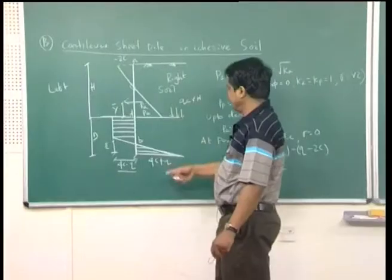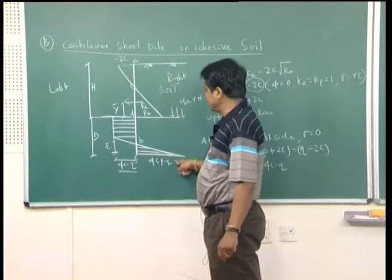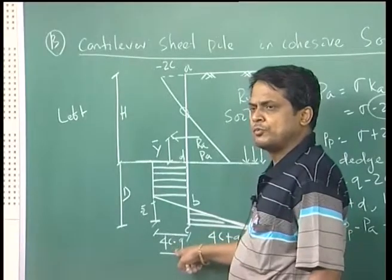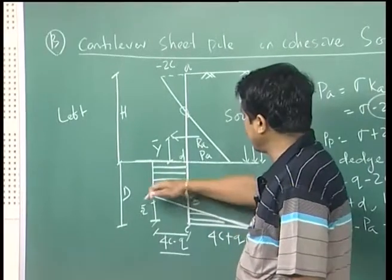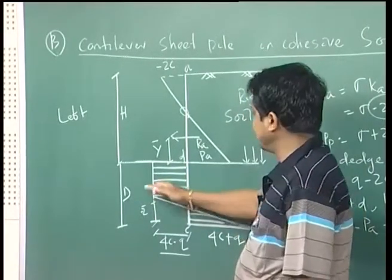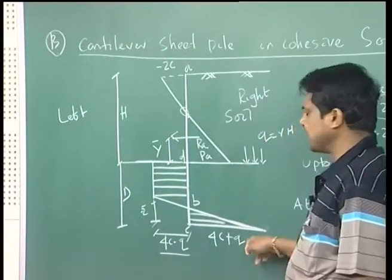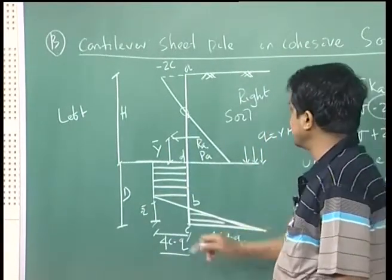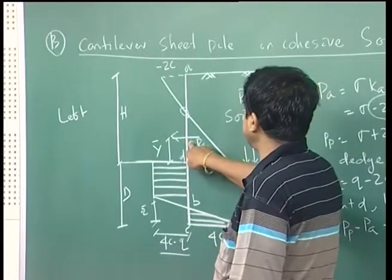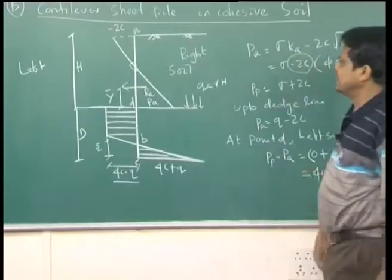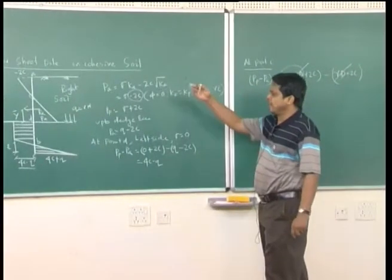There is a smooth transition from one pressure to the other — from 4C + Q on one side to 4C − Q on the other. The resultant RA acts here and the distance is 2C. This explains how the earth pressure diagram has been derived and plotted.